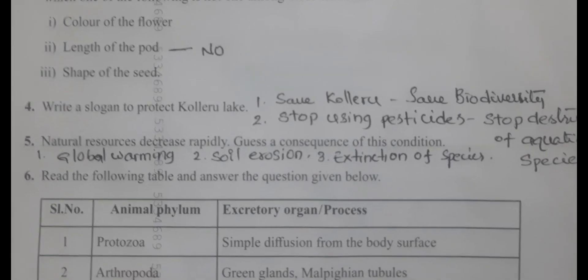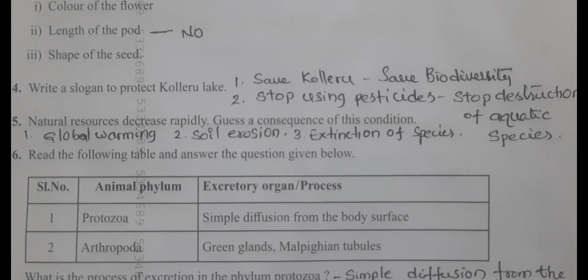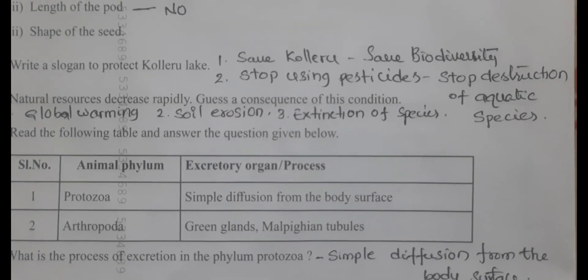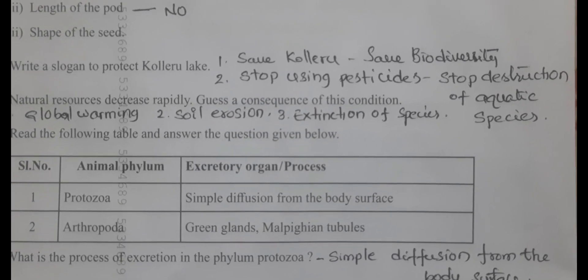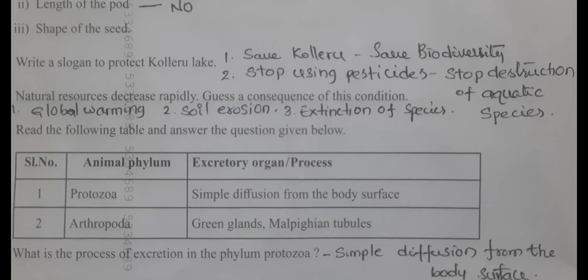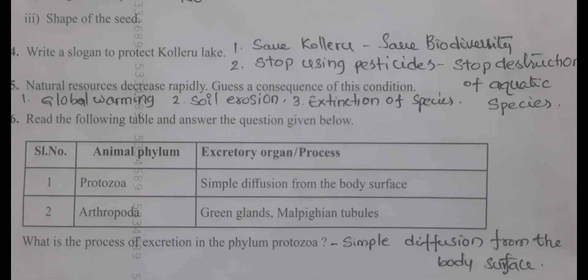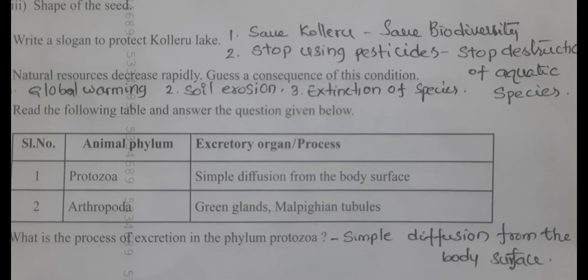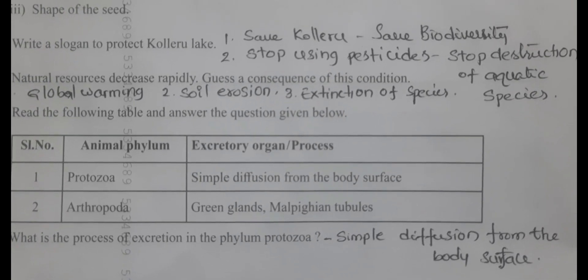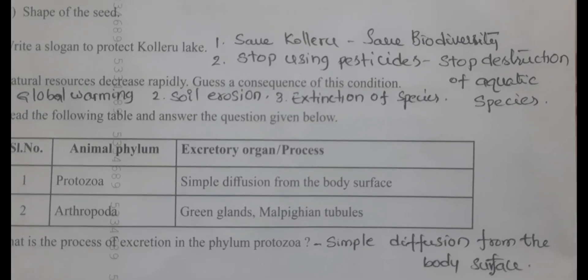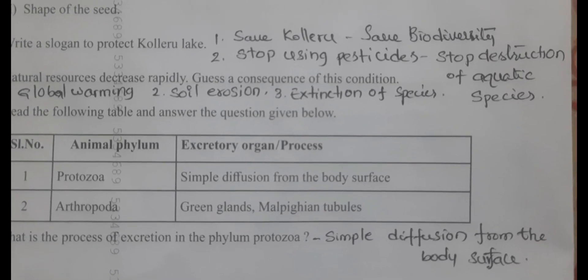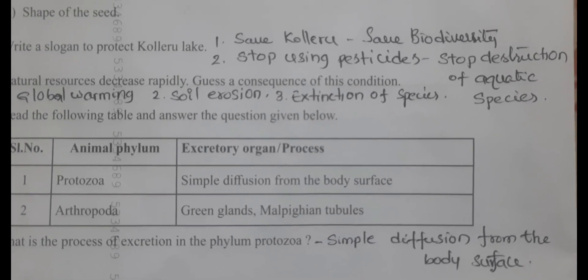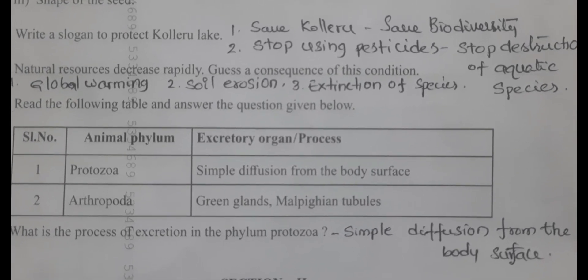Fourth question: write slogans to protect Kolleru. The slogans are: 'Stop using pesticides' and 'Stop destruction of aquatic species.' Two such slogans are required as the answer.